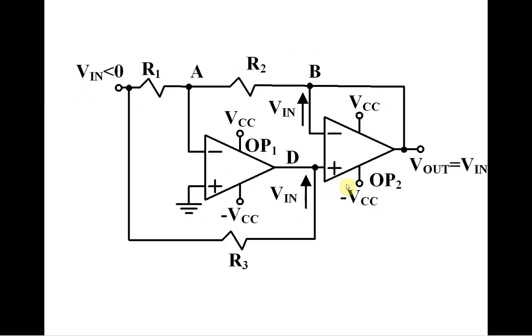What is happening when input change polarity to negative? Let's first assume that output is also negative. In that case, point B is also negative, as well as point A. Inverting terminal of Op-Amp 1 is negative. Non-inverting terminal of Op-Amp 1 is on the higher potential than the inverting. Op-Amp 1 is saturated to plus Vc.